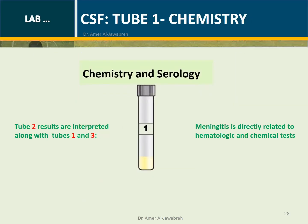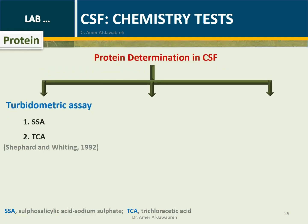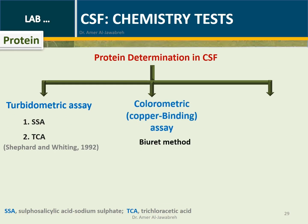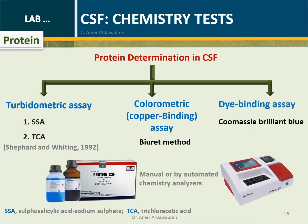CSF Tube 1 — Chemistry and Serology: The three tubes are interpreted concurrently. Protein in CSF is determined either by turbidometric assay such as SSA and TSA, or by colorimetric copper-binding assay such as the biuret method, or by dye-binding assay such as Coomassie brilliant blue. Protein can be determined by manual methods or by automated chemistry analyzers.